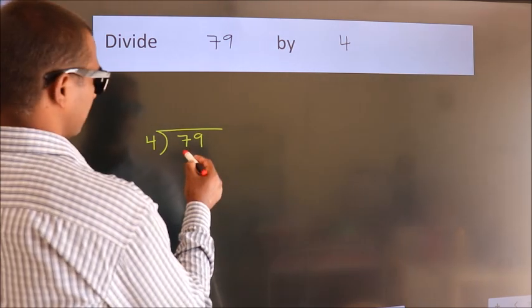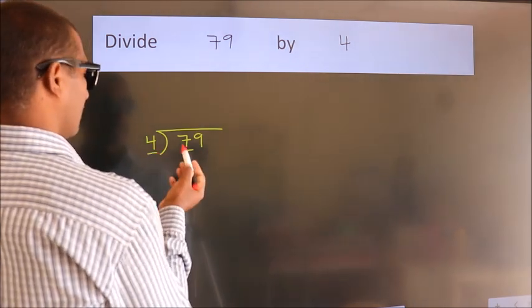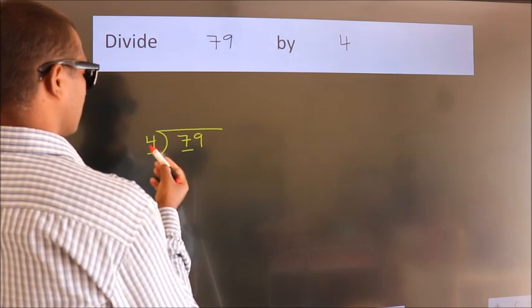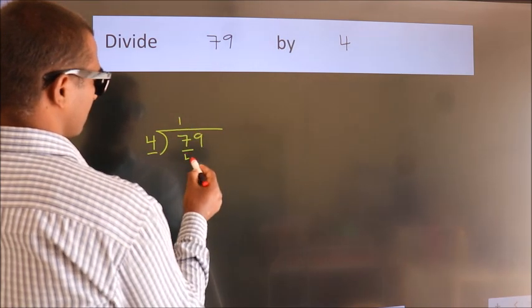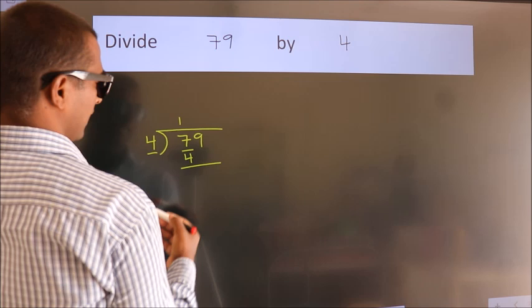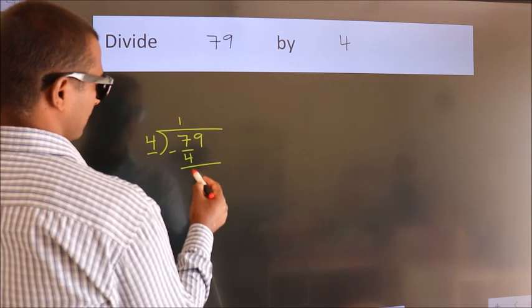Here we have 7, here 4. A number close to 7 in the 4 table is 4 ones, which is 4. Now we subtract and get 3.